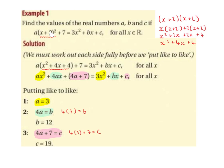So (x plus 2) squared is really (x plus 2) times (x plus 2), which gives us x times (x plus 2) plus 2 times (x plus 2), which gives x squared plus 2x plus 2x plus 4, which simplifies to x squared plus 4x plus 4.